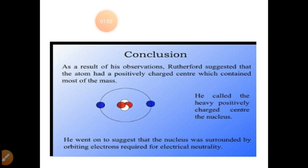Conclusion. As a result of his observations, Rutherford suggested that the atom had a positively charged center which contained most of the mass. He called the heavy positively charged center the nucleus. He went on to suggest that the nucleus was surrounded by orbiting electrons required for electrical neutrality.